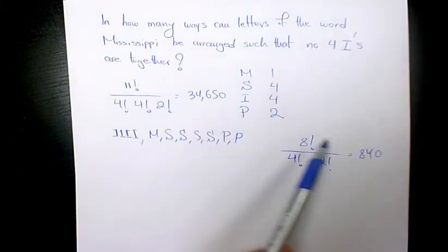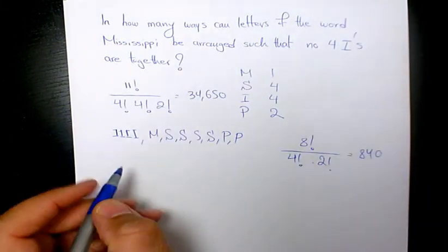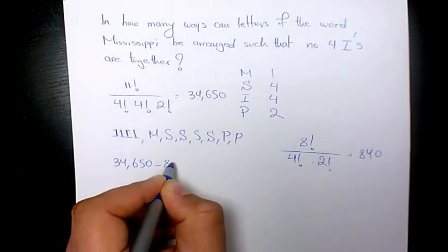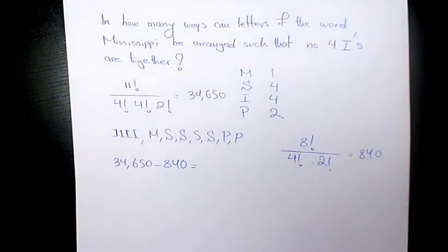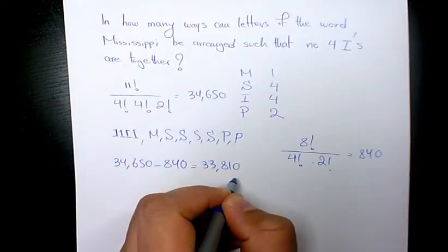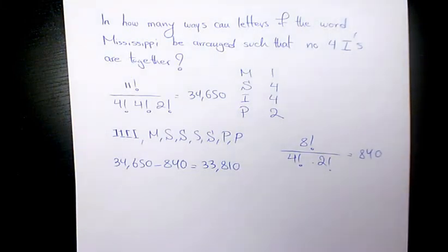So now what I can do, I can find the difference here. 34,650 minus 840, that is going to give you 33,810 different ways to write the word Mississippi without having four I's together.